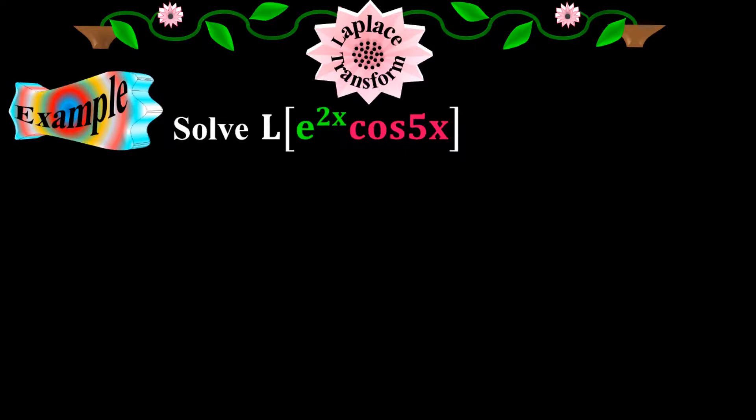Example. Solve Laplace of e to the 2x times cos 5x. You see here the given function f of x is the product of two elementary functions. One is exponential function which is e to the 2x and the other is cos 5x which is a trigonometric function.